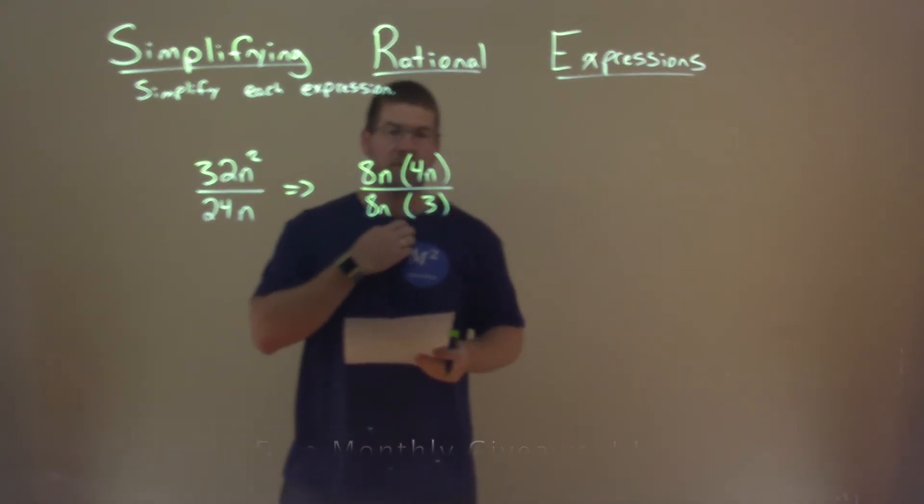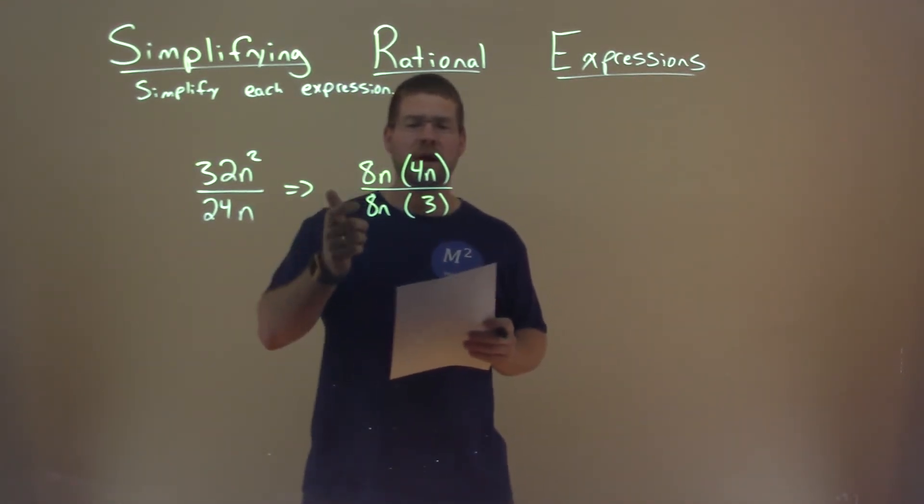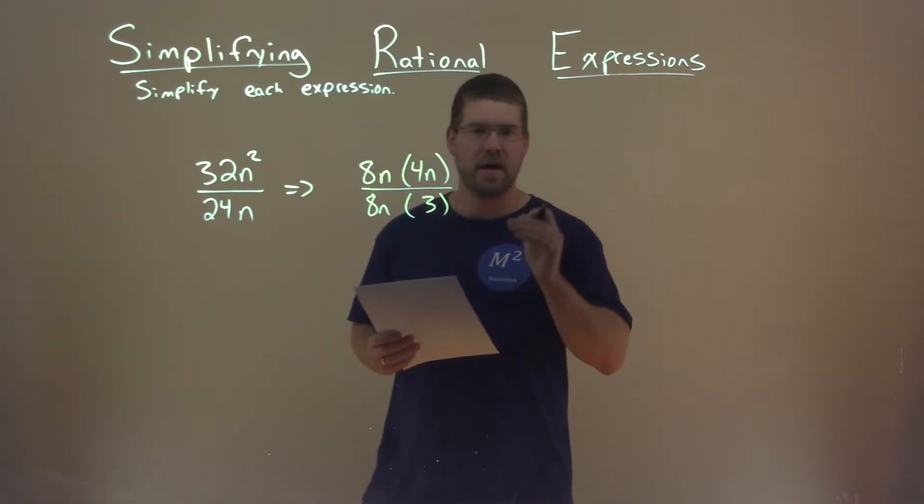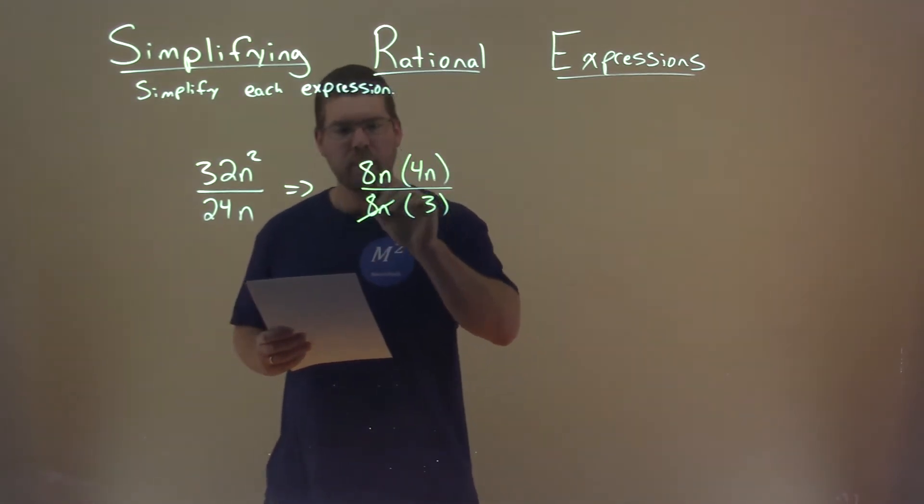So now we've simplified this a little bit, kind of broke it apart. Our numerator and denominator both share 8n, meaning we can eliminate them right there.